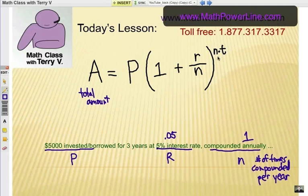Now this n times t, again n is the number of times compounded per year and t is the time period in years. Always in years. Now I want to talk about this exponent right here.